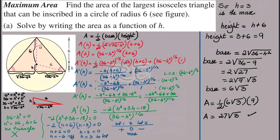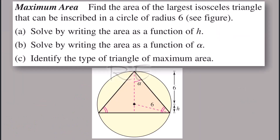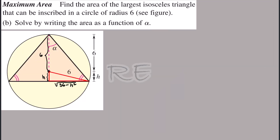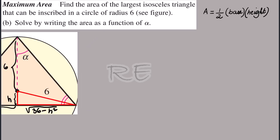In part one, we were able to find the area of the largest isosceles triangle in terms of h — A(h) — because the area of a triangle is half of the base times the height. The base is 2√(36 − h²) and the height is 6 + h.